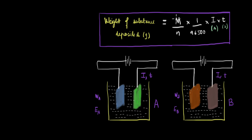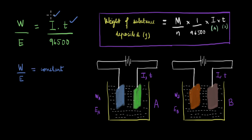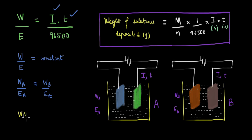We saw how M divided by N is the equivalent weight of the substance deposited. If we take M/N to the left-hand side, we can write W divided by E — where E is the equivalent weight — equals whatever remains on the right-hand side: I multiplied by T divided by 96,500, which is one Faraday. Since the current I is the same in both cells and the time T is also the same, the right-hand side is a constant. Therefore W divided by E is a constant, meaning WA/EA equals WB/EB, which rearranges to WA/WB equals EA/EB.